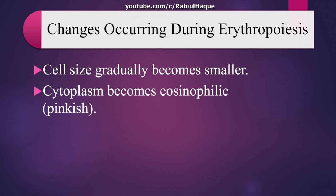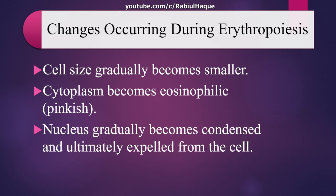Another change during erythropoiesis involves the nucleus. Gradually, the nucleus will become condensed, and ultimately it will be expelled from the cell to produce a non-nucleated reticulocyte, from which we will get the mature red blood cell.